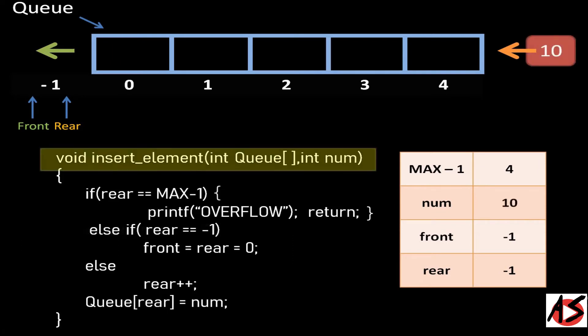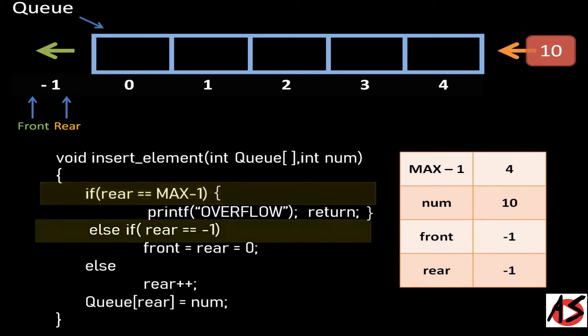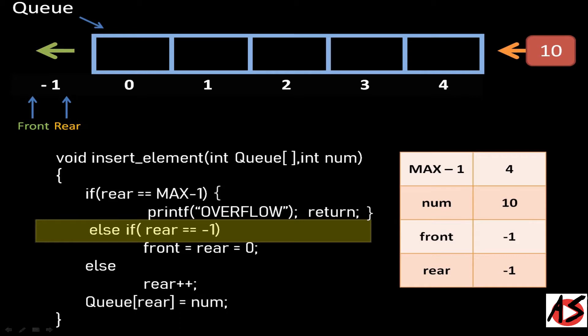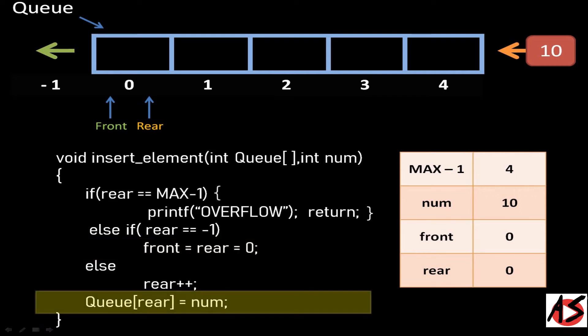Now if we want to insert an element, we call the function insert element which takes the Queue array and a number variable. Here we want to insert value 10, which will be copied into the number variable. First it checks the condition: rear equal to max minus 1. In our case rear is minus 1, which is not equal to max minus 1 that is 4, so condition is false. Next it checks the condition rear equal to minus 1, which is true, so front and rear are both set to 0. Finally, at position 0 in the Queue array, the value of number, that is 10, is added.